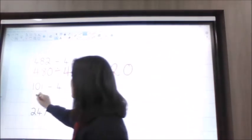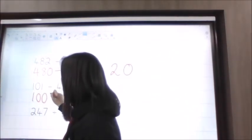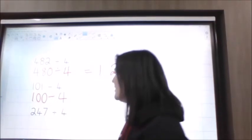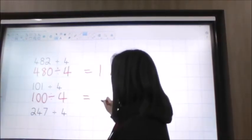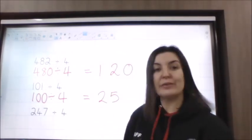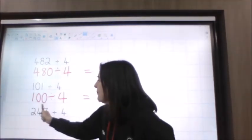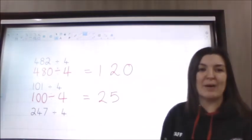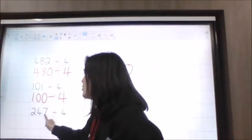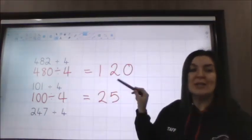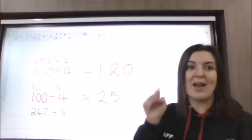The next one is 101 — I'm going to make that 100, because I know that a quarter of 100, which is 100 divided by four, is 25. So I'd like you to have a go now: it's 247 divided by four. Think about your four times table — what could you make 247 into to easily divide it by four? Pause the video and have a go now.